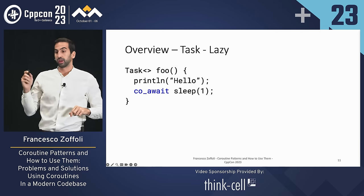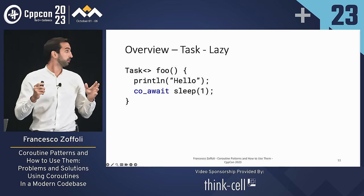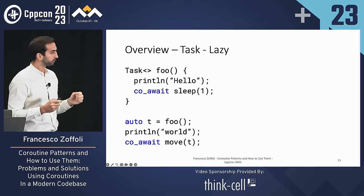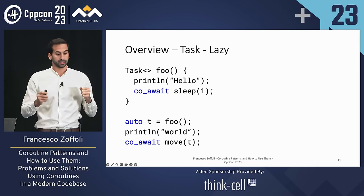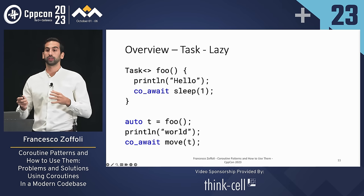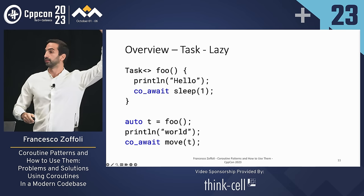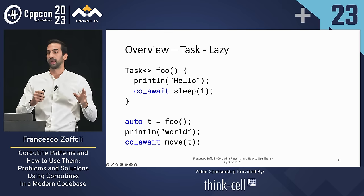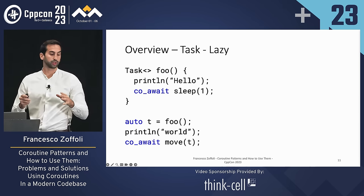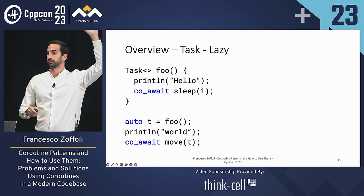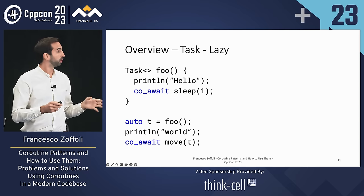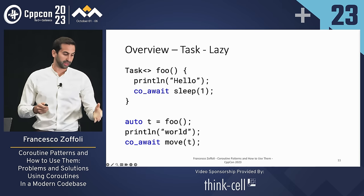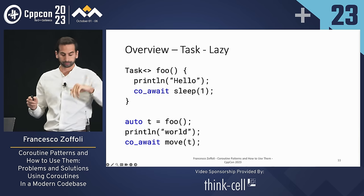Let's see an example. We have a task, foo, which is going to print hello and then sleep for one second. Then we call foo, get a task, print world, and then await the task. So this could print either 'hello, world' or 'world, hello'. The answer is 'world, hello' — because we create the task, but it's lazy so no execution starts. We print world first, and then we print hello when we await the task.